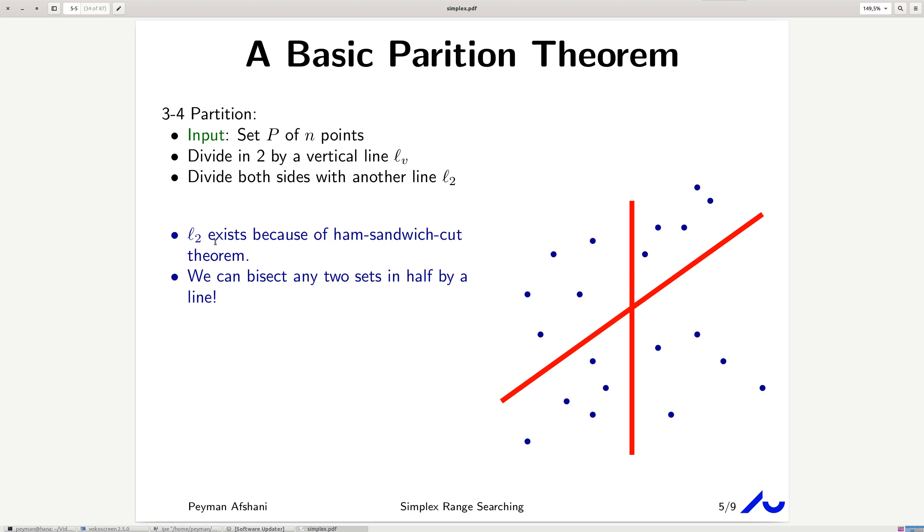The existence of L2 exists because of a particular theorem known as a ham sandwich cut. Basically, this theorem says that if you have two sets of points in the plane, you can find a line that divides both of them in half at the same time. Before, we had two sets, the left set and the right set. Each one had 10 points in them. By this theorem, I can find a line that divides both of them in half.